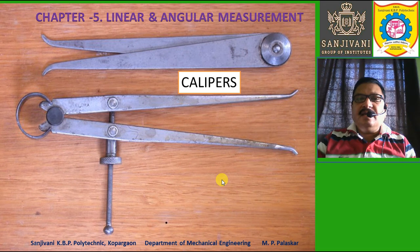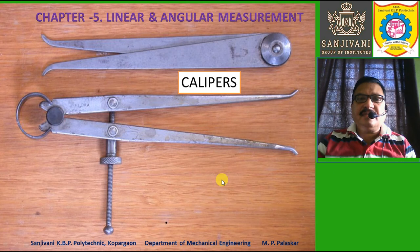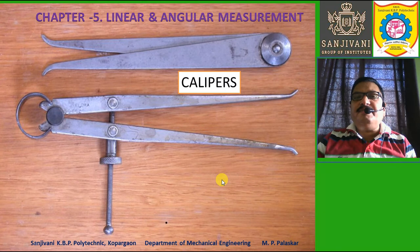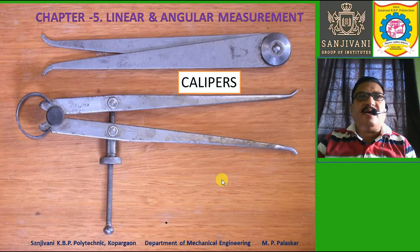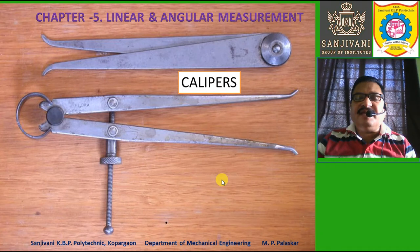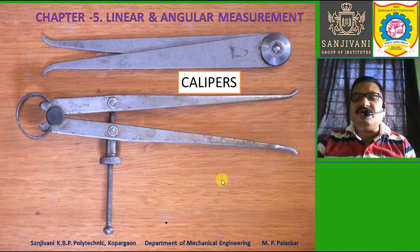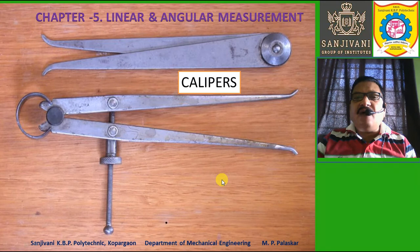Welcome to this session on engineering metrology. Today we will discuss Chapter 5 on linear and angular measurement. In the previous class we discussed V blocks and the surface plate, which is necessary for linear and angular measurements as a reference horizontal plane.